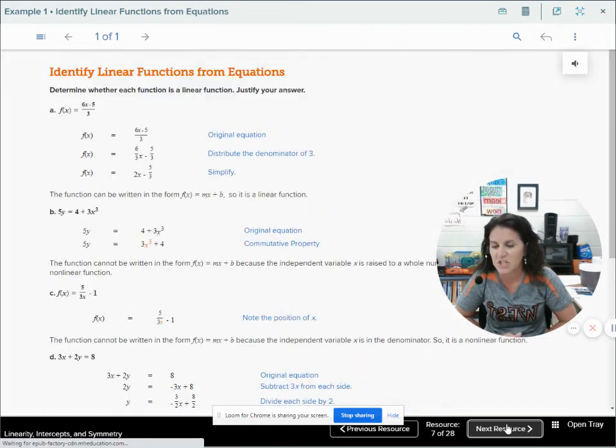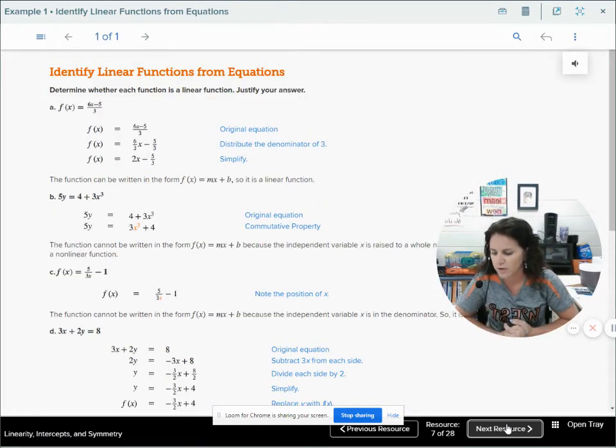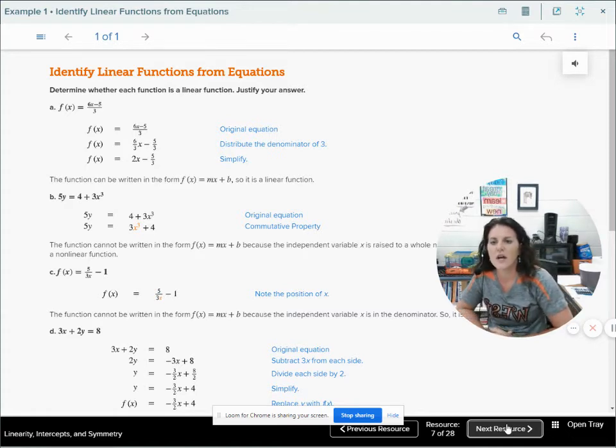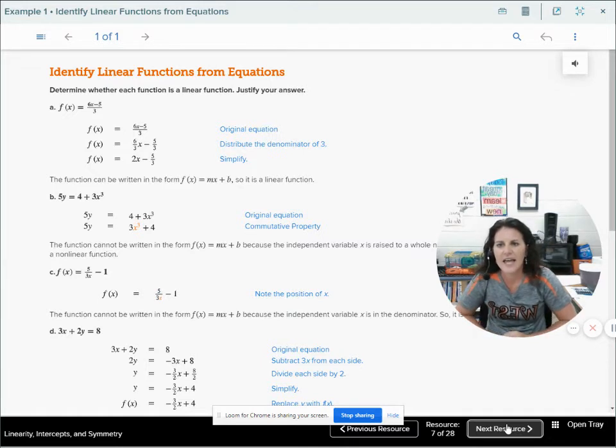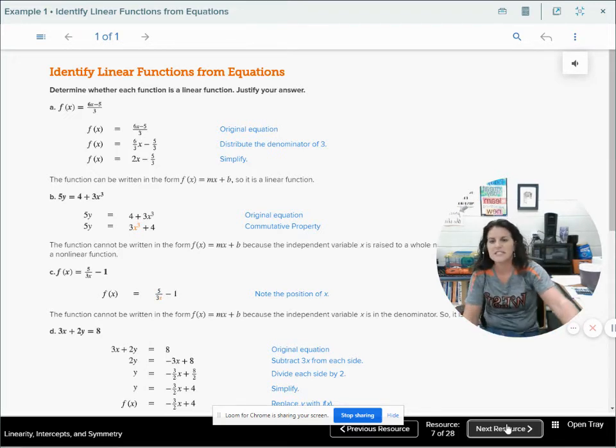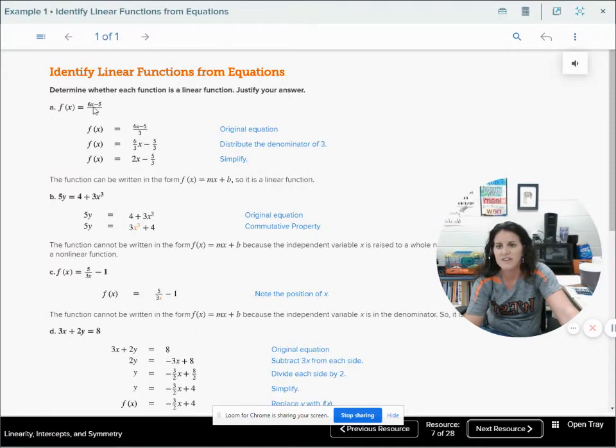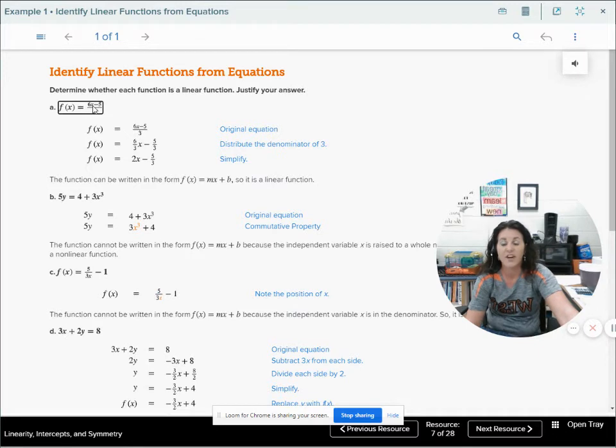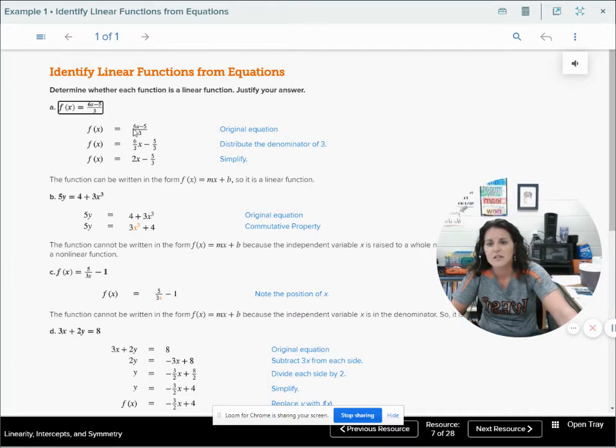Jumping into example 1 at the bottom of page 13 in your workbook. We're going to work through this together. Part A, we're determining if it's linear or nonlinear. 6x minus 5, all divided by 3. I like to look at the variable. This variable has an understood 1, it's not in the denominator, so I know this is linear because my variable term, the x, does not have an exponent other than 1. We could simplify this: take the original equation and distribute that denominator of 3, simplify, and then it makes it easier to see that it's written in the form mx plus b, where my b is negative 5 thirds.